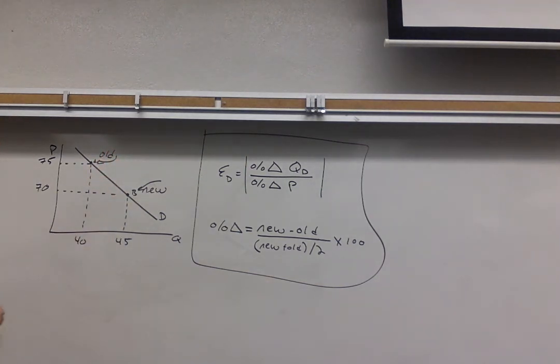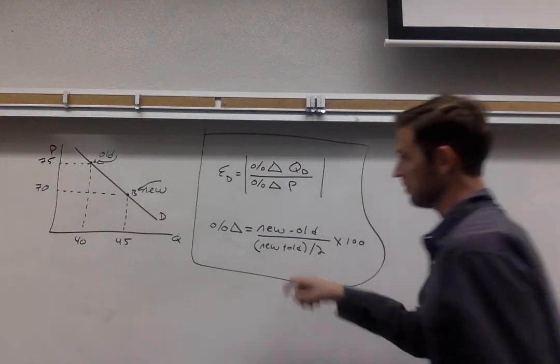So I'm going to say that our new quantity here is going to correspond with point B and our old one corresponded with point A. The narrative might be that initially the price was 75 and then the price fell to 70 as opposed to the opposite. That's going to help us in setting up the problem.